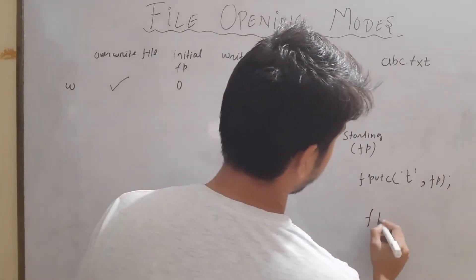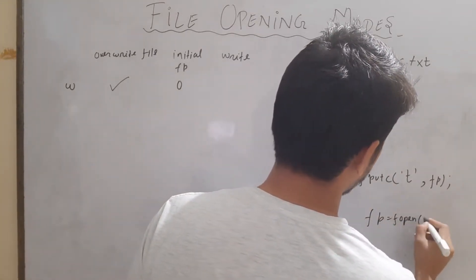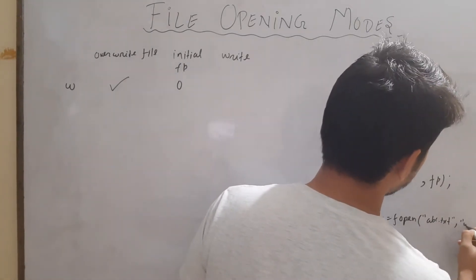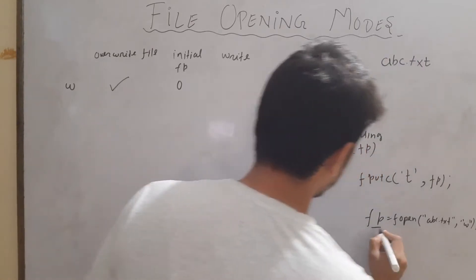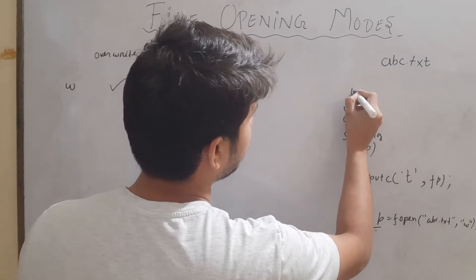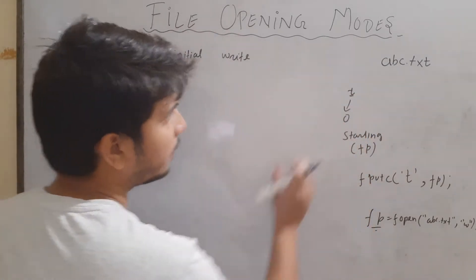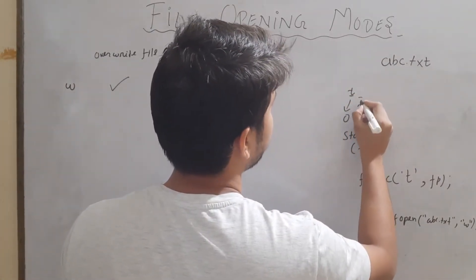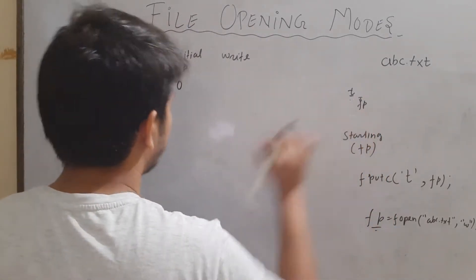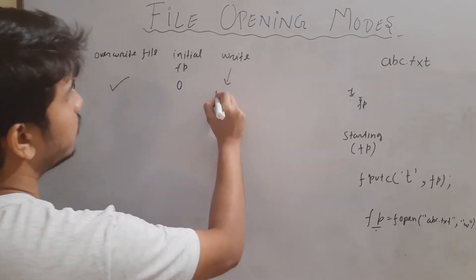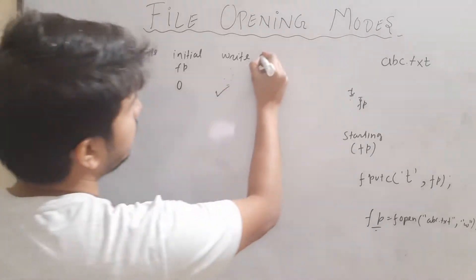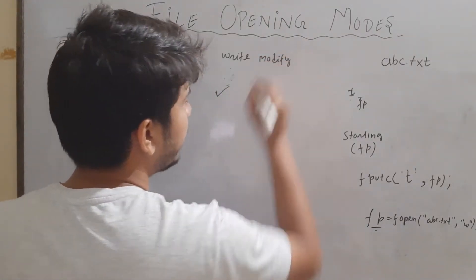Assuming fp equals fopen with filename abc.txt and mode 'w', the character 't' is going to be written at the current position, and the file pointer will increment its position. So we are able to write content to the file — this is true.